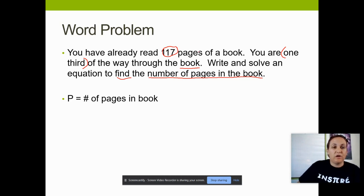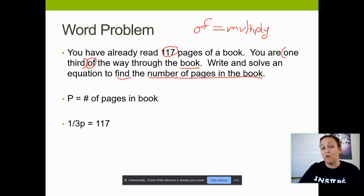And then we just need to figure out again, the one third and the P for the pages, how are those connected together? So there's this teeny tiny word right here. It's only two letters, of. And of in math class means multiplying. So anytime that you read the word of in a math sentence, they're telling you to do multiplication. So of means multiplying. So I'm going to take my one third of multiplied by the pages in the book, and that should equal the 117 pages that I've already done.